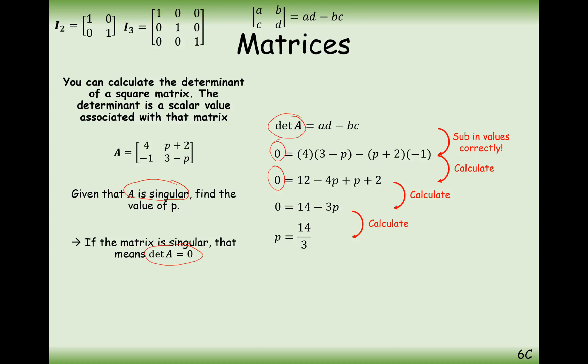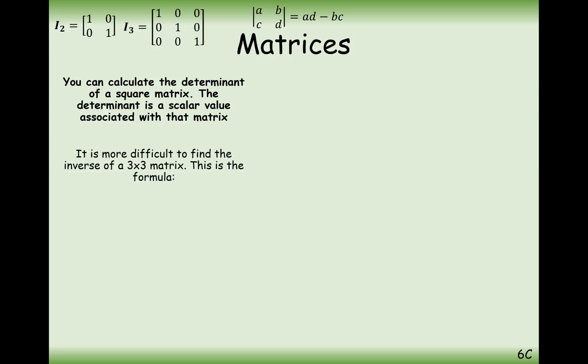That's the value for P when A is singular — in other words, when it doesn't have an inverse. We'll look at inverses later. So that's how we find the determinant of a 2 by 2: multiply the leading diagonal, subtract the other diagonal. Let's now look at finding the determinant of a 3 by 3.